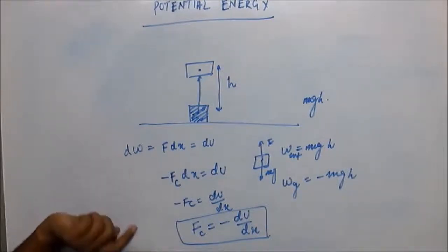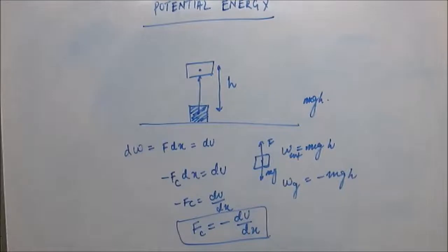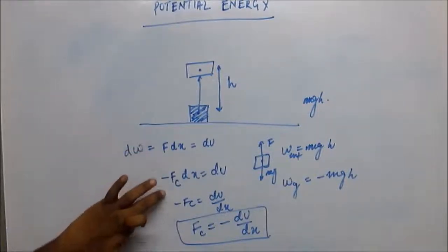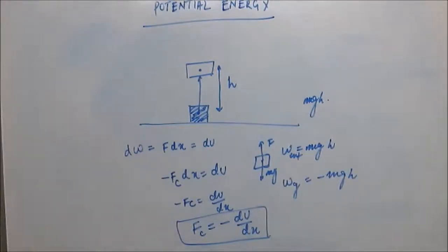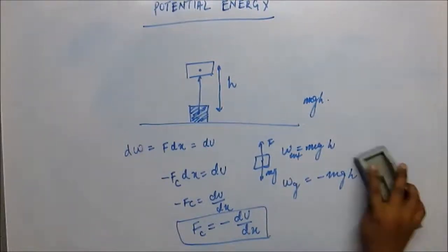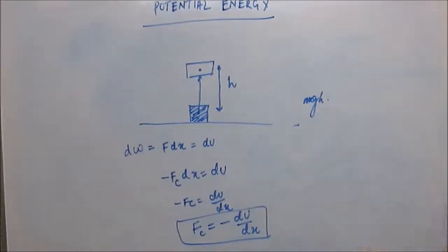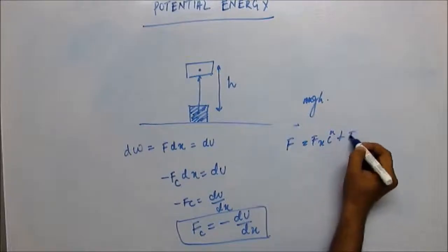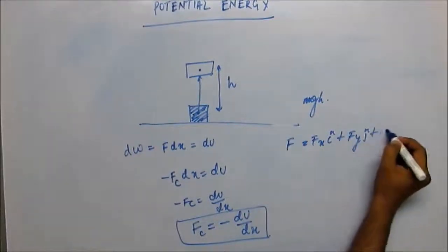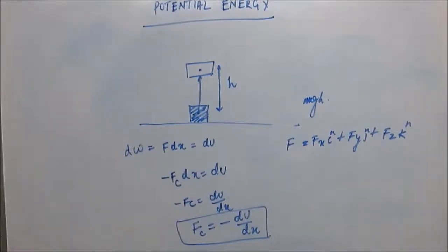Conservative force equals negative differential of potential energy — this is extremely important in chemistry and physics at the molecular level. We derived it by noting the potential energy change is the work done, and we replaced the external force by the equal and opposite conservative force. Now, in the case where the force is not linear but is a multi-directional force in three dimensions, a force can be written as F = Fx i-cap plus Fy j-cap plus Fz k-cap.